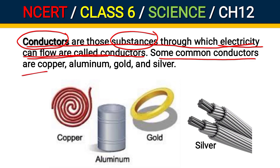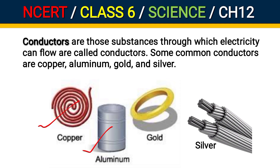Some common conductors are copper, aluminum, gold, and silver. All of these are good conductors of electricity, but not all can be used in electronic devices because silver and gold have very high costs. Therefore, when any electronic device is made, the cost of materials is also considered. Generally, copper and aluminum wire are used in electric devices.